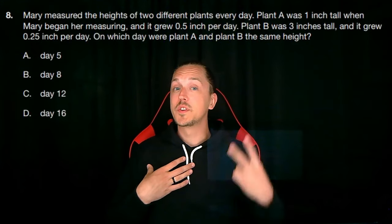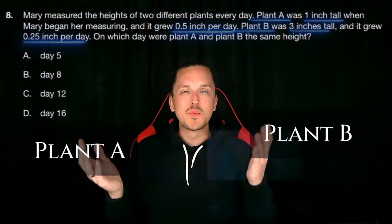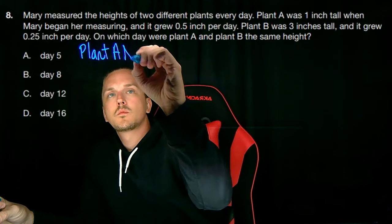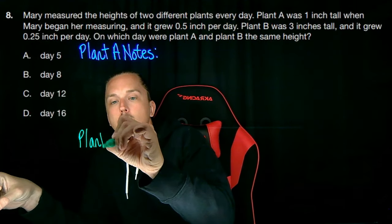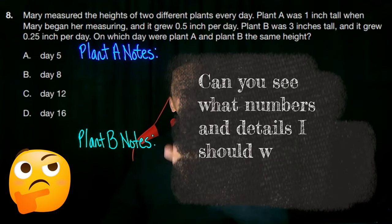I see that we are working with two plants, plant A and plant B, and we have some numbers associated with each of them. Alright, let's pause here and start taking some notes. We'll have one area for plant A notes, and one area for plant B notes. Can you see what numbers and details I should write in for each of these?